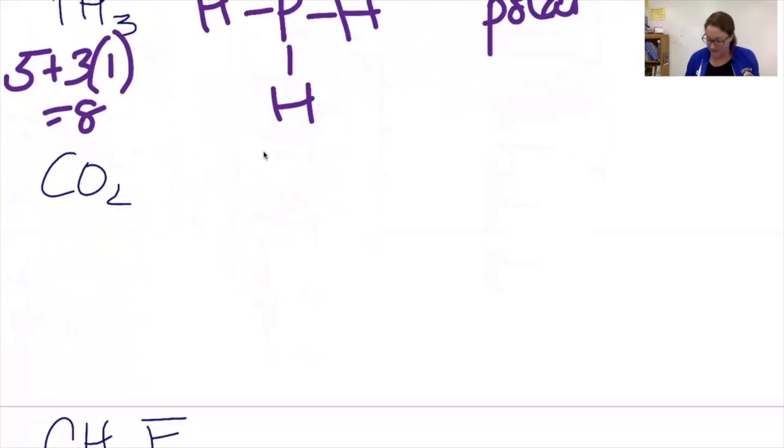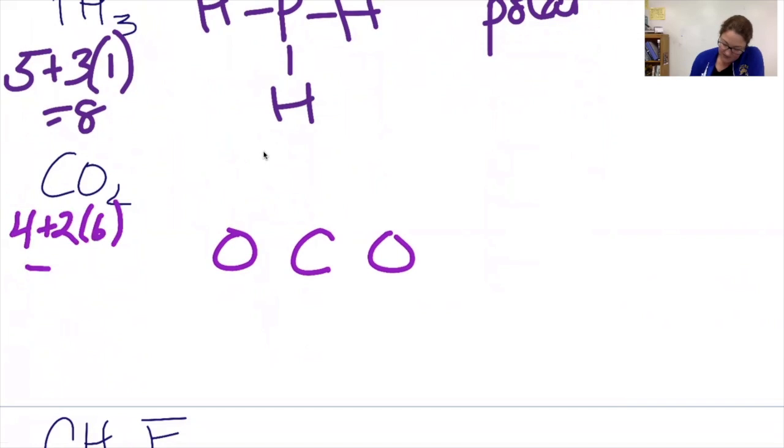My next example, carbon dioxide. Carbon in the middle, oxygens around. Counting up valence electrons, I have a total of 16 electrons to assign.